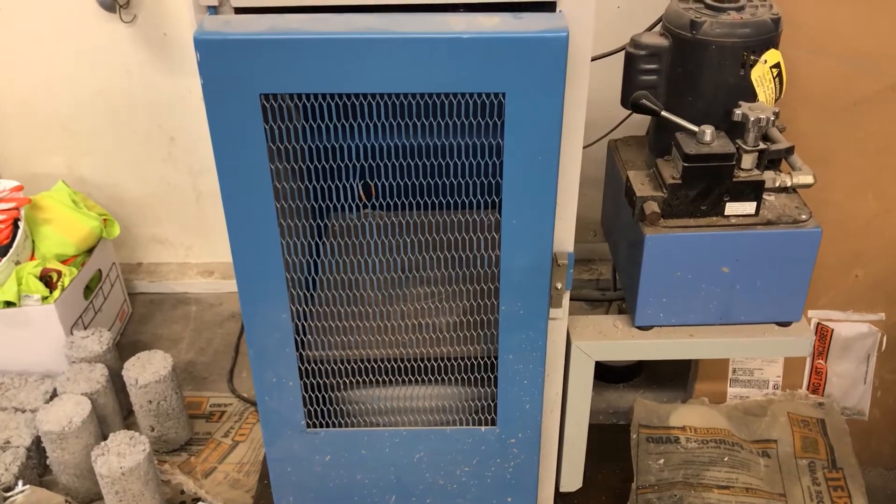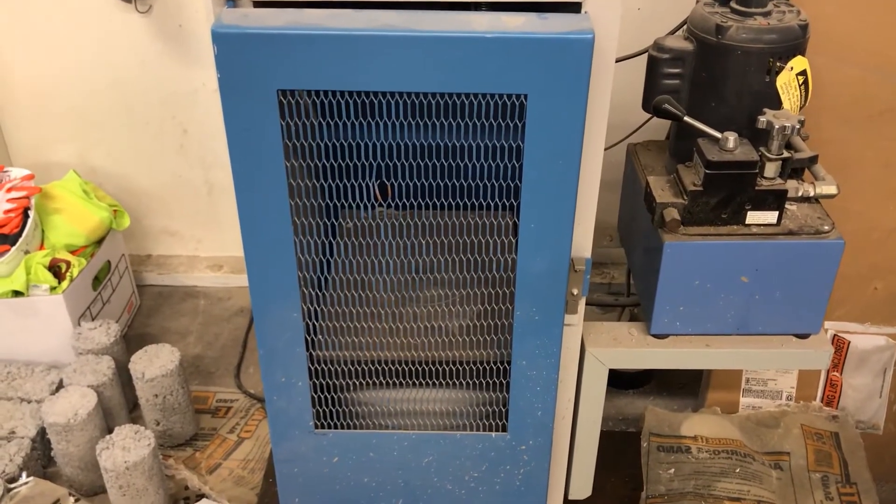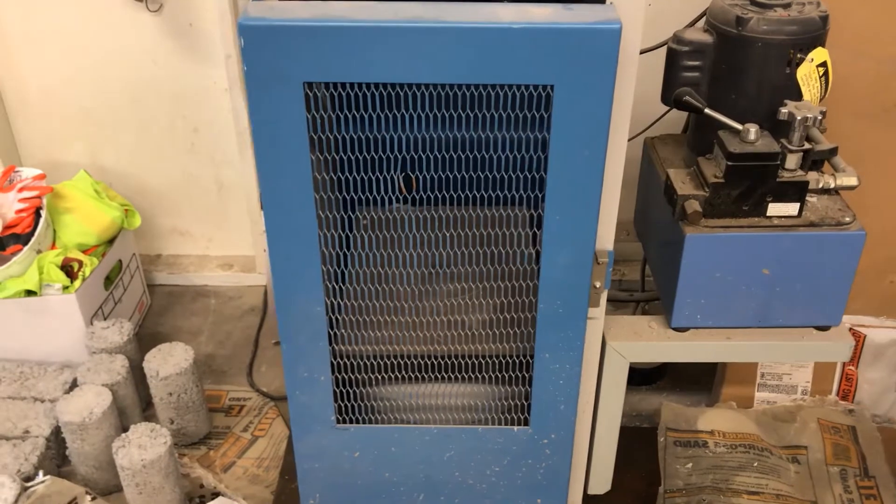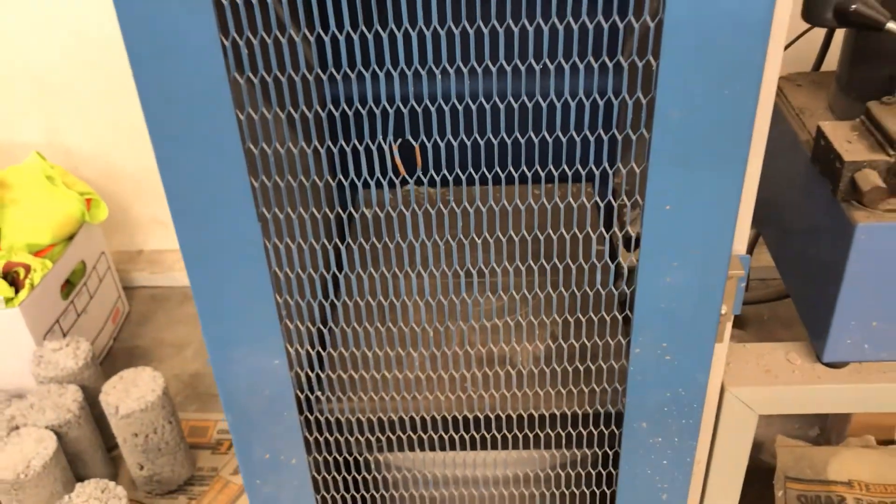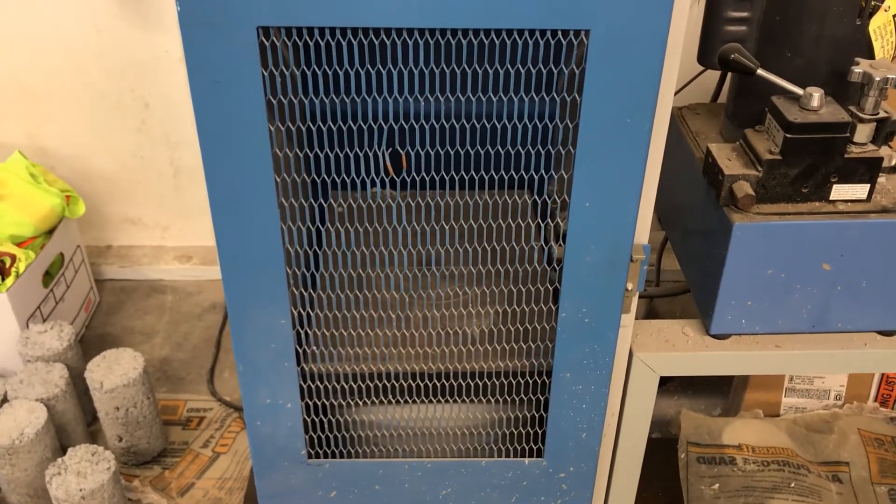Now, of course, the disadvantage is that we can't really see clearly what's happening to the specimen during the test. I mean, you can see through the screen here, kind of, but not as good as you can see it when we use the Tineus Olsen machine.